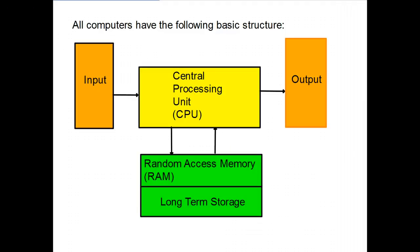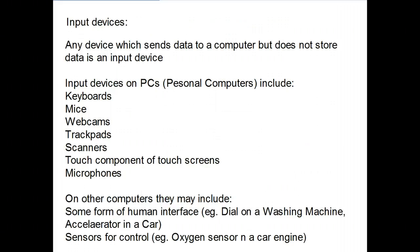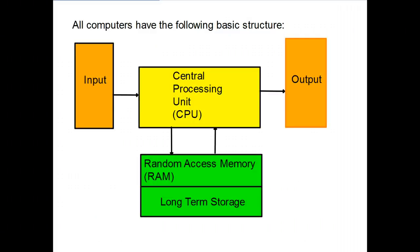All computers have the following basic structure: they have some sort of an input, a central processing unit which processes the information and transforms it in some way, and some sort of output. Below the CPU there is random access memory, RAM, which is a volatile form of storage — as soon as you turn the device off the RAM is cleared. There is also long-term storage which, when you disconnect the power, doesn't lose the information straight away, though all storage systems have some sort of lifespan.